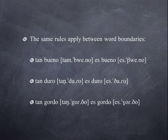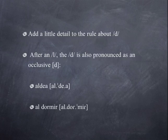Those rules even apply between word boundaries. So if I want to say tan bueno, how would you say that? Tan bueno. Right, you see after that n, the b is going to be occlusive. But you say es bueno, you would say es bueno. How about tan duro? Tan duro. Es duro? Es duro. Tan gordo? Tan gordo. Es gordo? Es gordo.